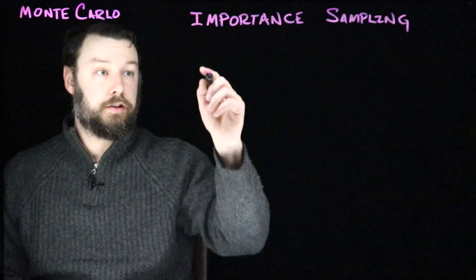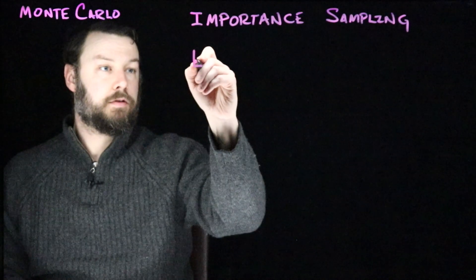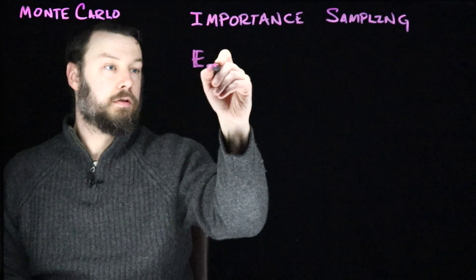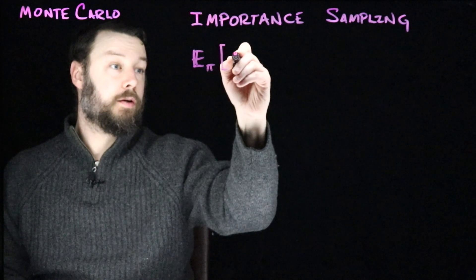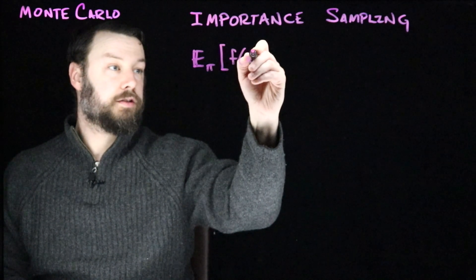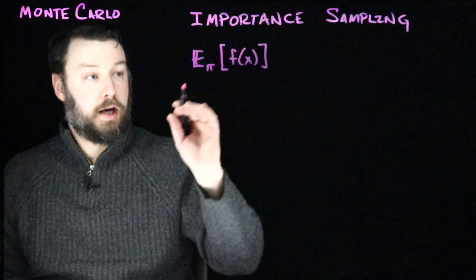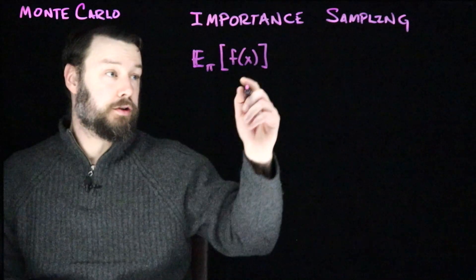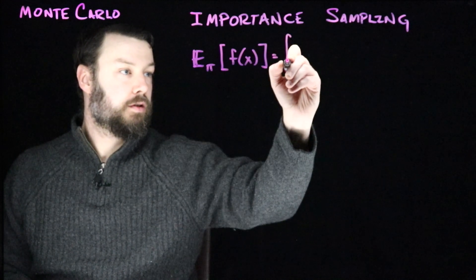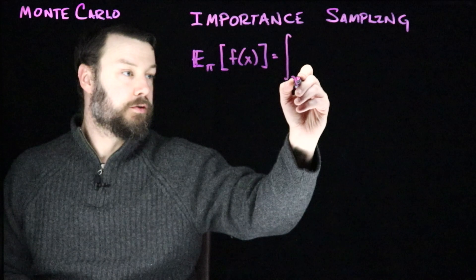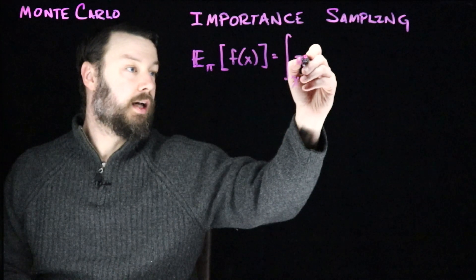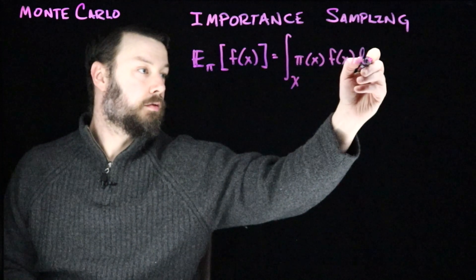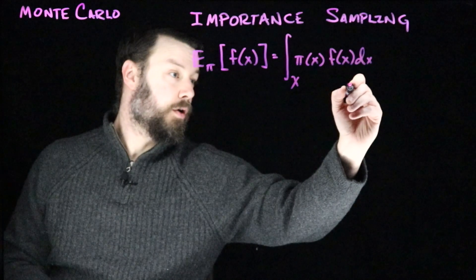But in the specific case where you're going to use those random samples to compute an expectation with Monte Carlo, it turns out that you can use a really interesting trick called importance sampling. So remember, the idea here is that we have some expectation under a distribution pi of some function f.